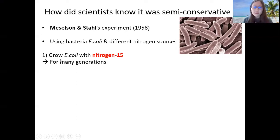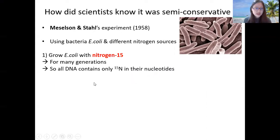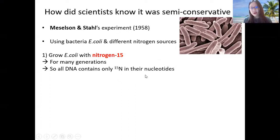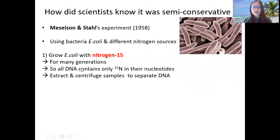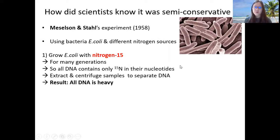What happens to this E. coli is that after many, many generations, the resulting E. coli would only have 15N, or nitrogen-15, in their nucleotides. So basically, if you separate the DNA, the DNA will be the heavy kind — heavier than usual.